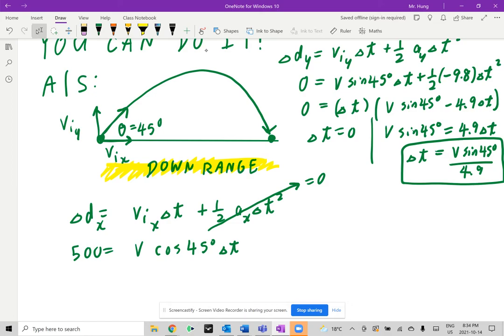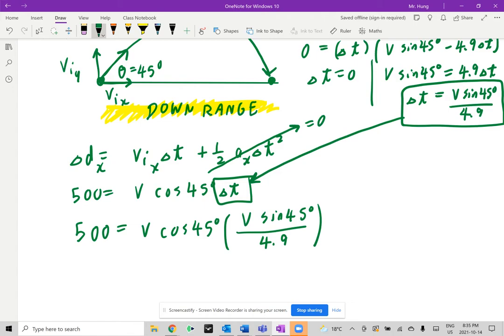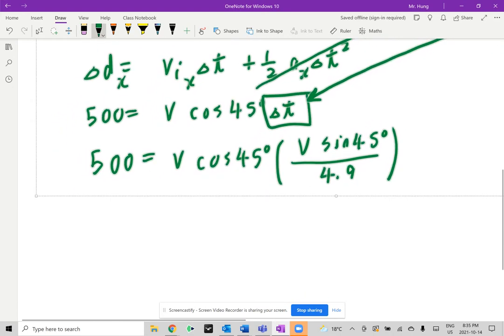All we have to do now is plug in time, which now means you can express this in terms of V, exactly what we're looking for. So if you go back, this is going to be 500, which equals to V times cosine of 45 degrees. If you think about time, that's going to be V sine 45 degrees divided by 4.9. The difficult part is now over.